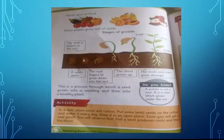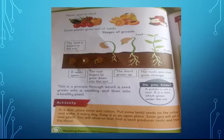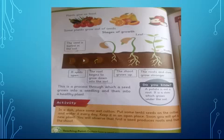Next page. Plants give us food. Some plants grow out of seeds. When we eat fruits and vegetables, they have seeds, and new plants come out from these seeds. Now we will discuss the stages of growth. How does a plant grow?